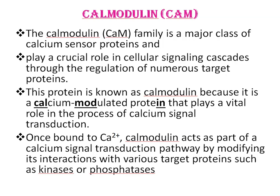Calmodulin. The calmodulin family is a major class of calcium sensor proteins and plays a crucial role in cellular signaling cascades through the regulation of numerous target proteins. This protein is known as calmodulin because it is a calcium-modulated protein that plays a vital role in calcium signal transduction. Once bound to calcium, calmodulin acts as part of a calcium signal transduction pathway by modifying its interaction with various target proteins like kinases or phosphatases.